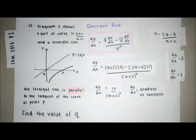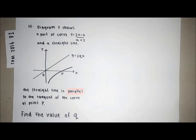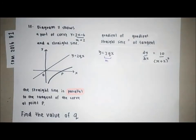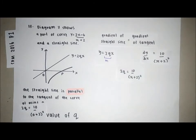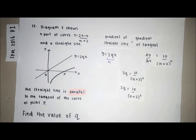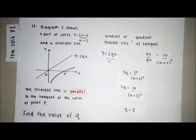Now we have the gradient of the tangent. We can find the value of q: 2q equals 10 over (x plus 2) squared. Inserting x equals 0, we get q equals 5.